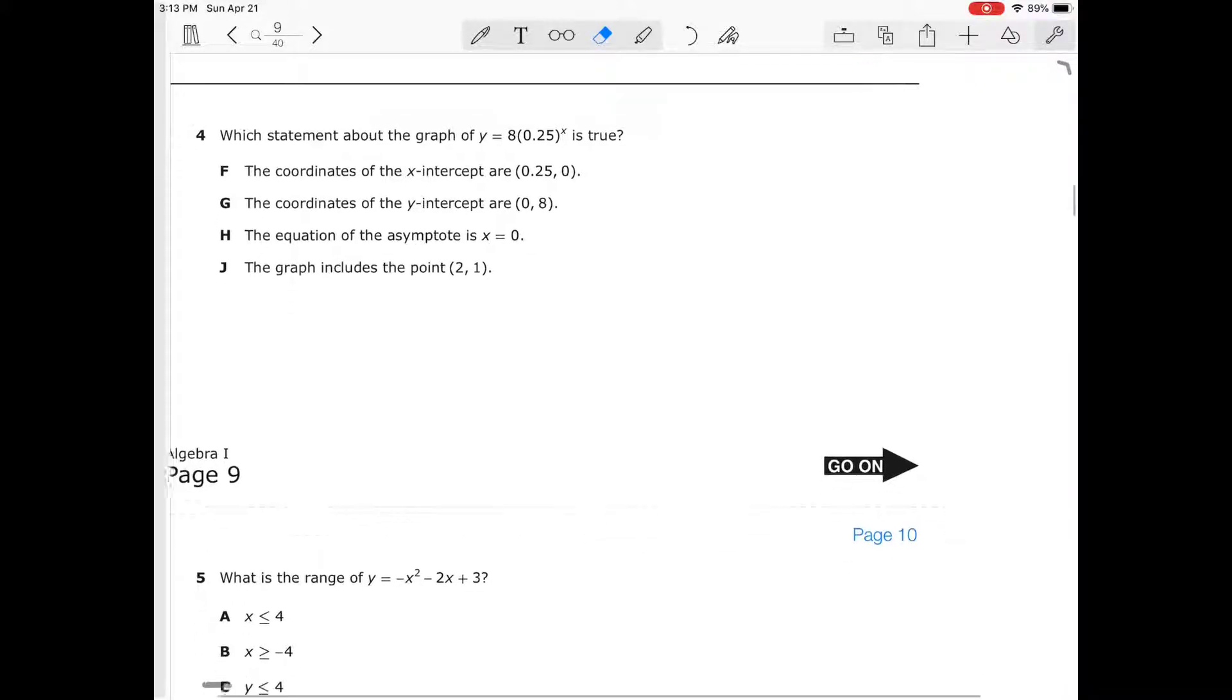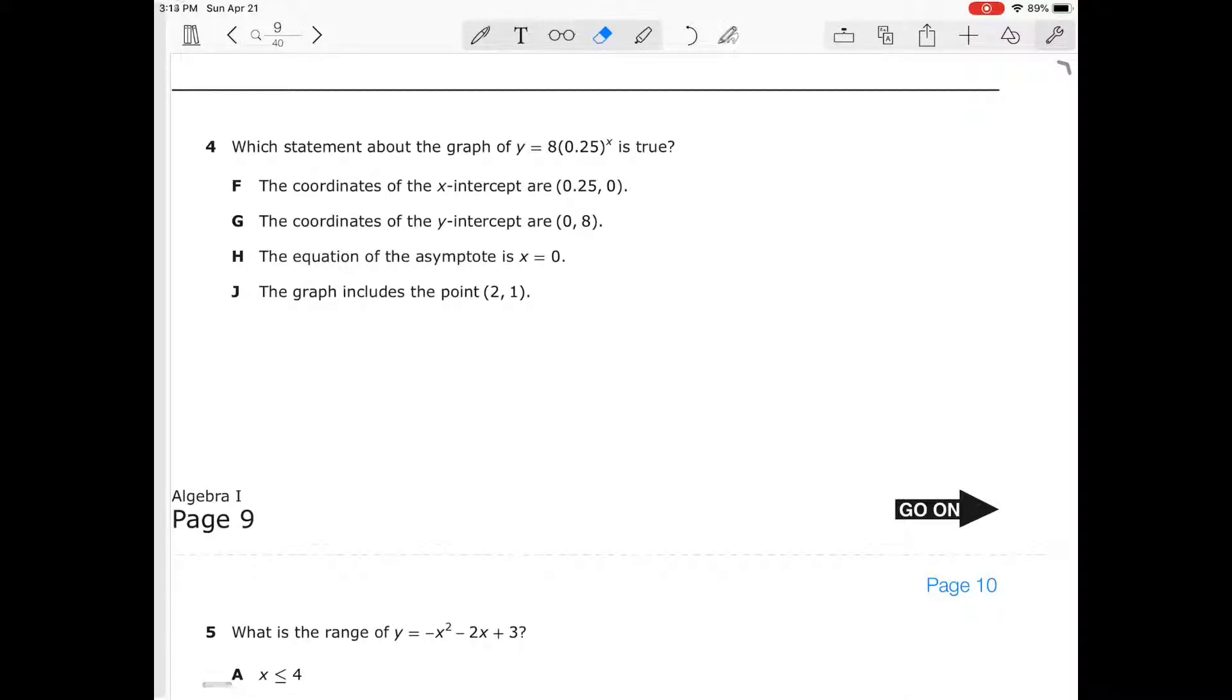I'm going to go into the next video on question four and then we'll talk on that one. In question number four it says which statement is true about the graph of y = 8(0.25)^x. This is an exponential function. The x-intercepts are (0.25, 0) - this is not true. This graph will never intersect or intercept the x-axis. That is false.